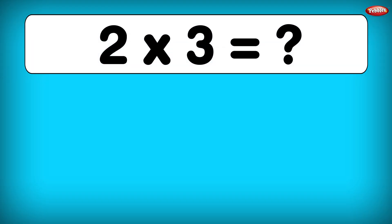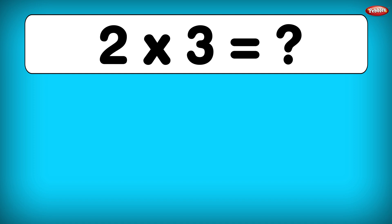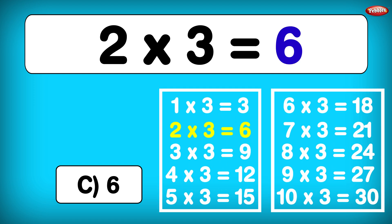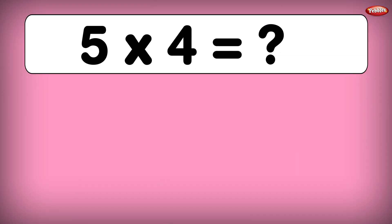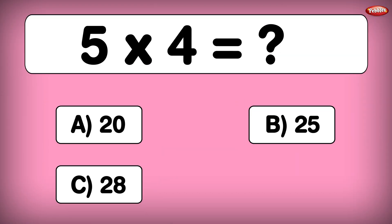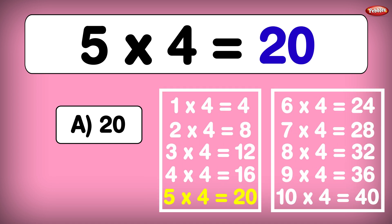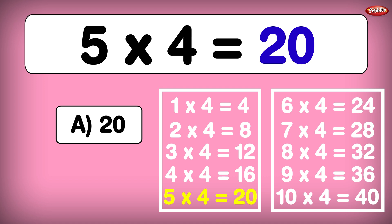2 times 3 is equal to... 2 times 3 is 6. 5 times 4 is equal to... 5 times 4 is 20.